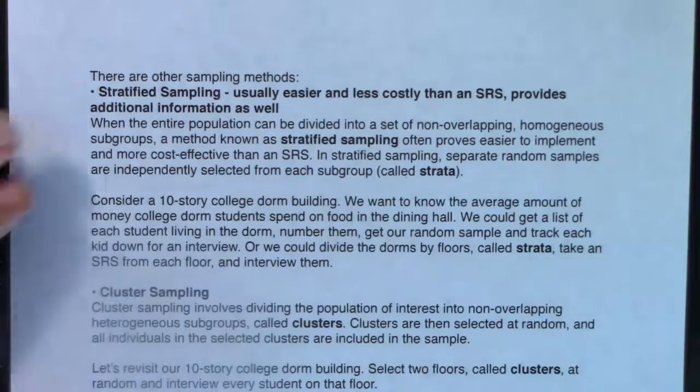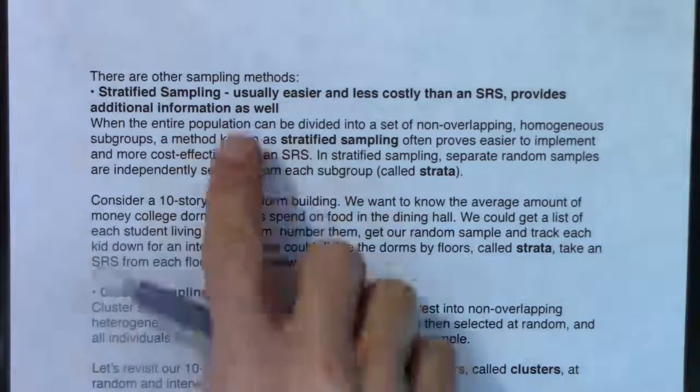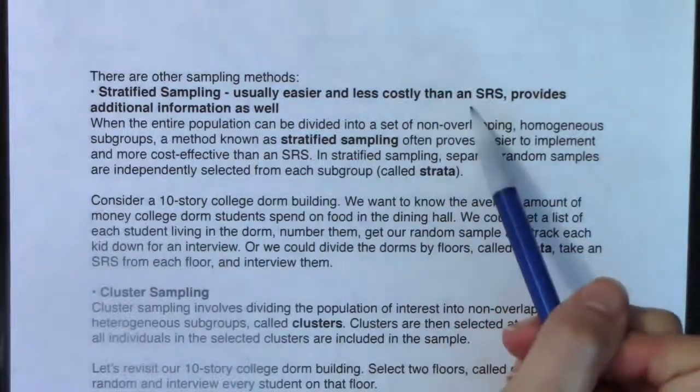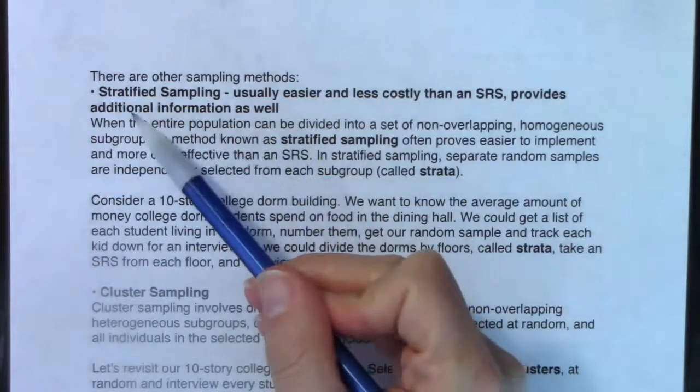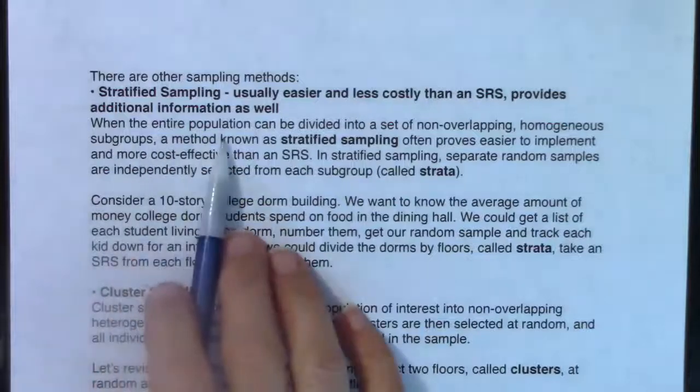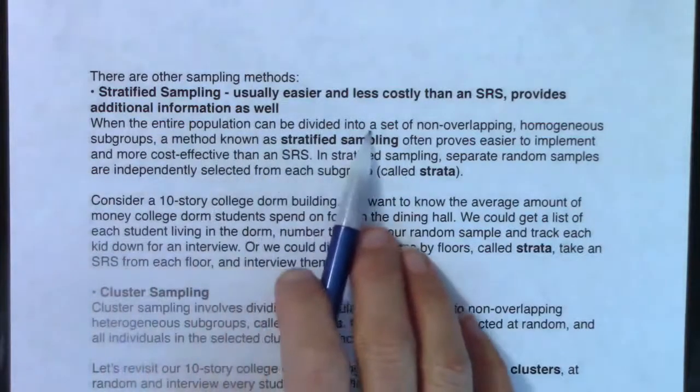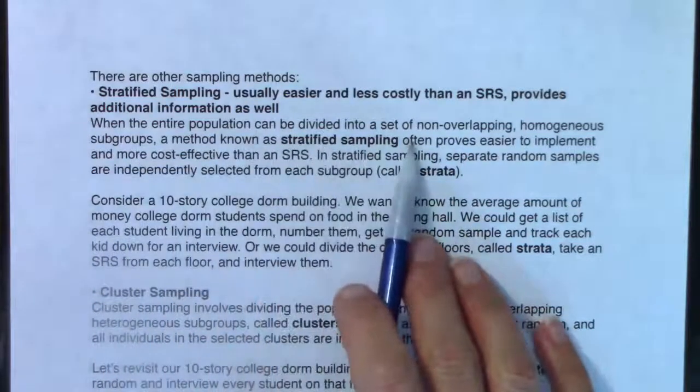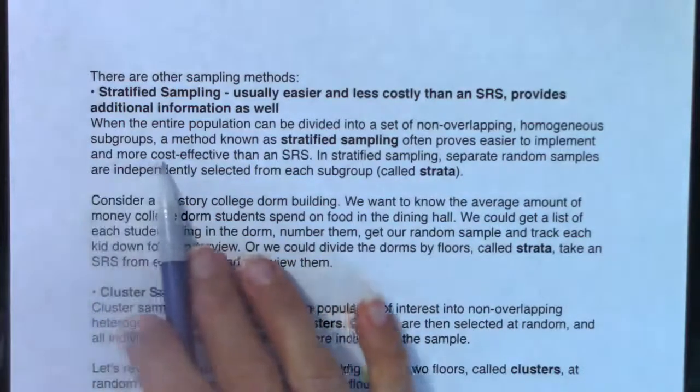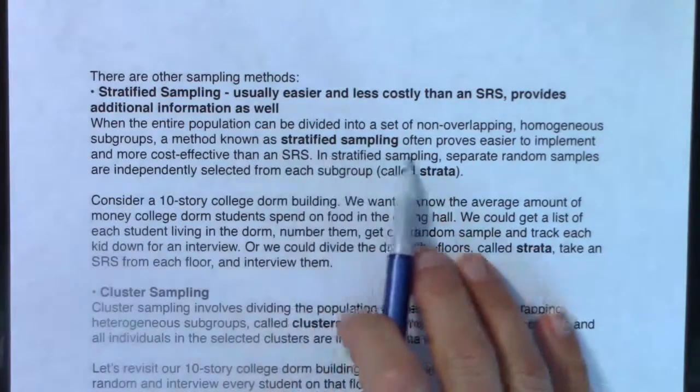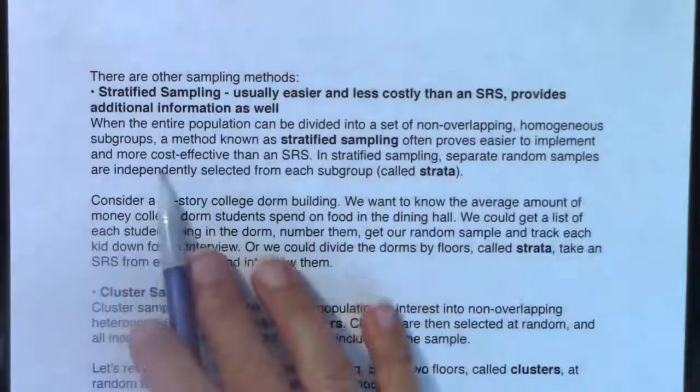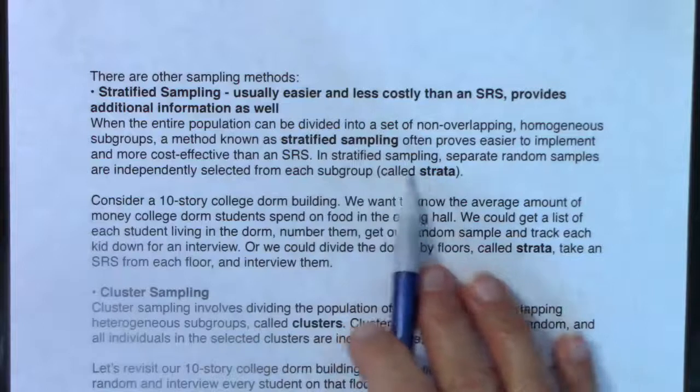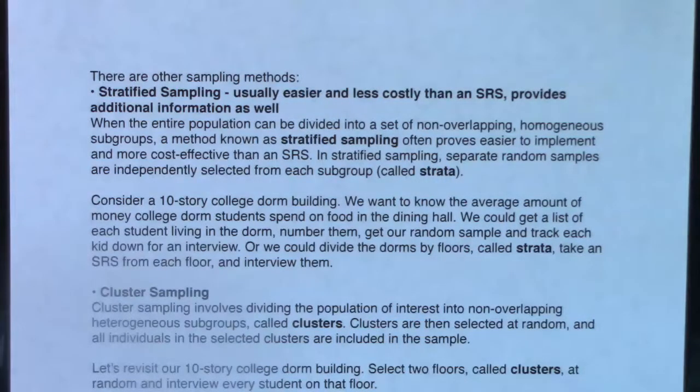So let me read through what stratified means and then we'll do a couple of examples. Stratified sampling is usually easier and less costly than an SRS, and it provides additional information as well. When the entire population can be divided into a set of non-overlapping homogeneous subgroups, a method known as stratified sampling often proves easier to implement and more cost-effective than an SRS.